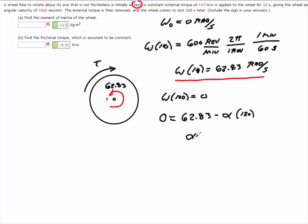Okay, solving for angular acceleration. Angular acceleration equal to a value of negative 0.524 radians per second squared.